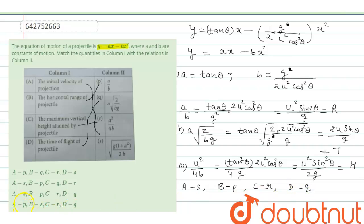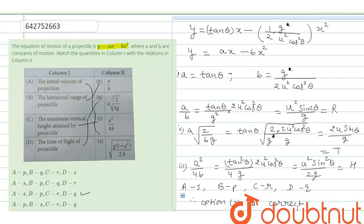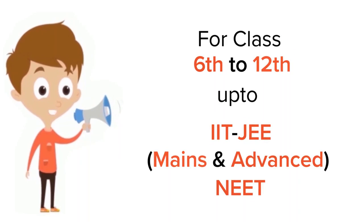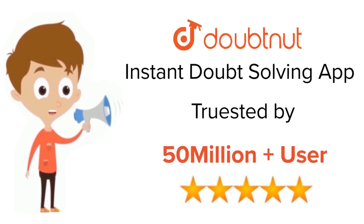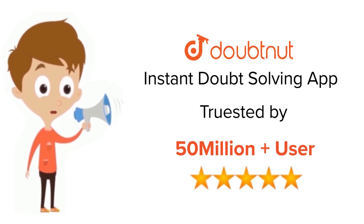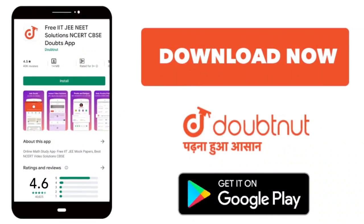So we can say that option number 3 is correct. For class 6 to 12, IIT and NEET level. Trusted by more than 5 crore students. Download the Doubtnut app today.